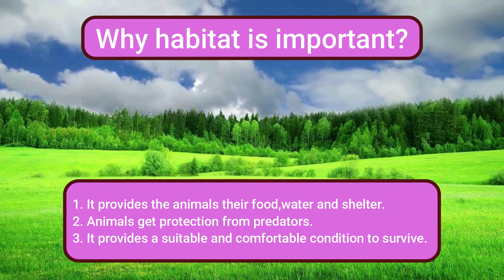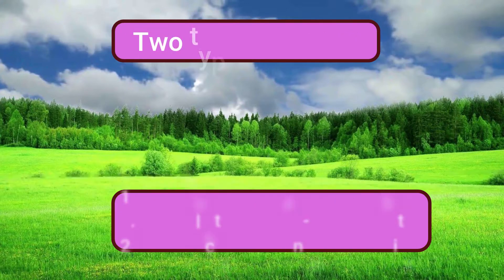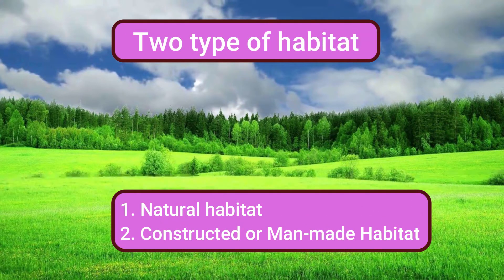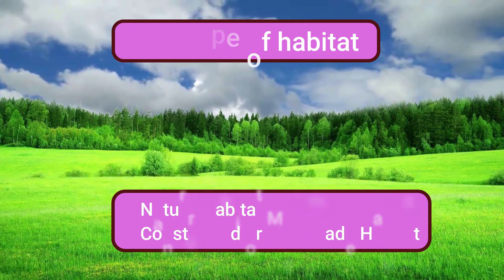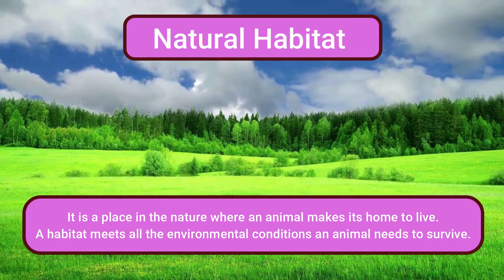Why is habitat important? It provides the animal their food, water, and shelter. Animals get protection from predators. It provides suitable and comfortable conditions to survive. There are two types of habitat: natural habitat and constructed habitat. Let's know them one by one.